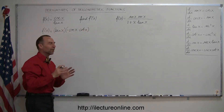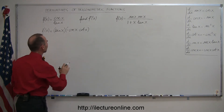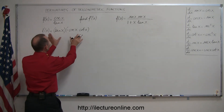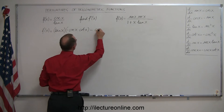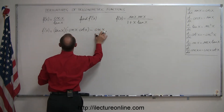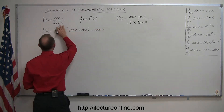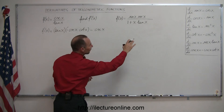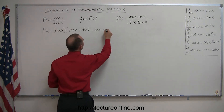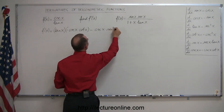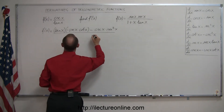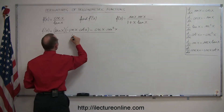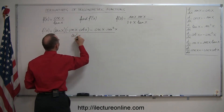Whenever I stop in the middle, I like to go back and make sure I still have everything right. Now it's minus the numerator, which is the cosecant of x, times the derivative of the denominator. The derivative of tangent of x is secant squared of x. Then we take the whole thing and divide it by the denominator squared, tangent squared of x.